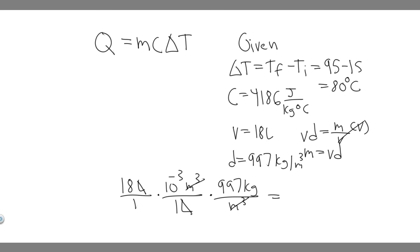Go ahead and multiply this out: 18 times 10 to the minus 3 times 997, and you're going to get a mass equal to 17.946 kilograms. Now we have the mass of our system.